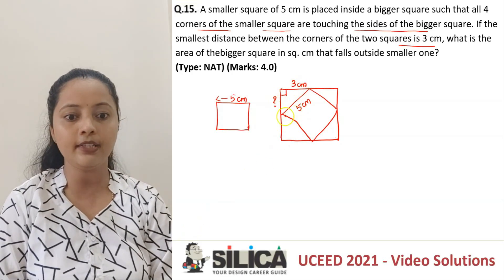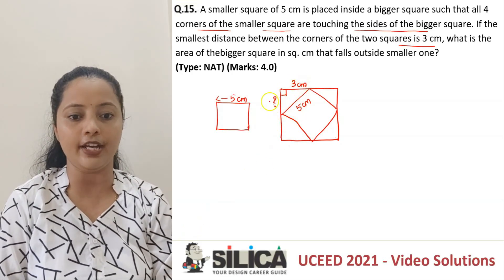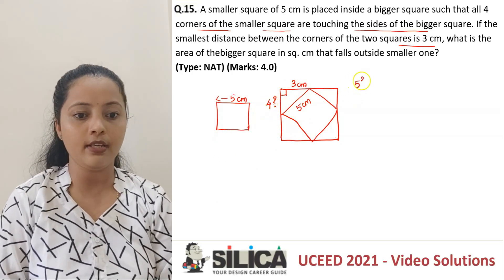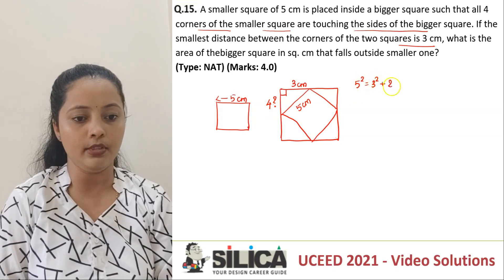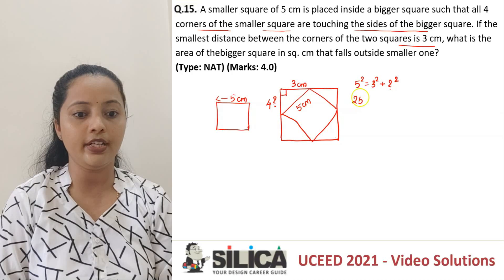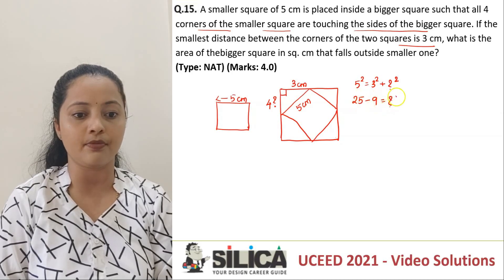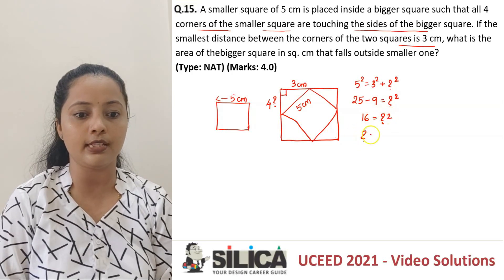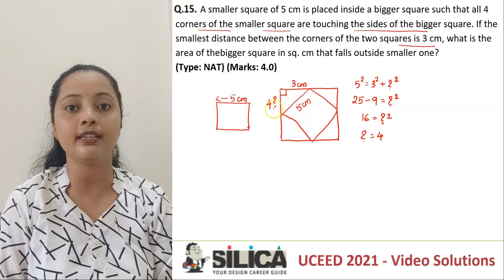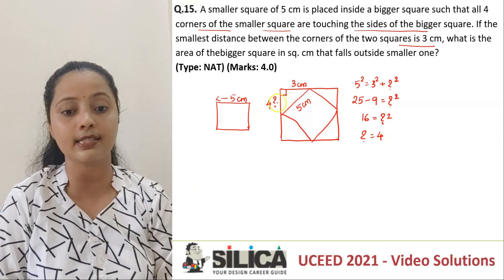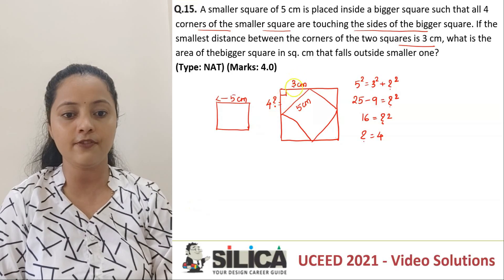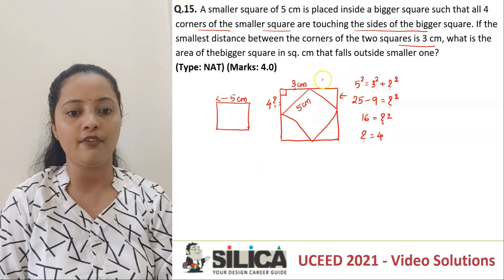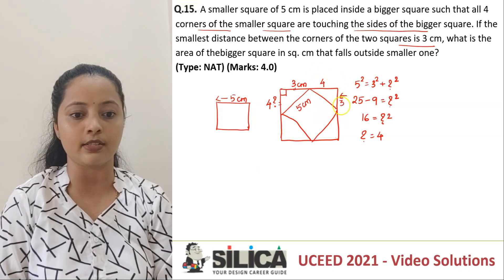I can. This is a Pythagorean triplet. So if this is x, with 3 and 5, the unknown value should be 4. We can verify: 5 squared equals 3 squared plus the unknown squared. So 25 minus 9 equals the unknown squared, which is 16 — so the unknown is 4. This gives me the remaining section of the outer square side. If this is 4 and this is 3, then this triangular part has sides 4 and 3.